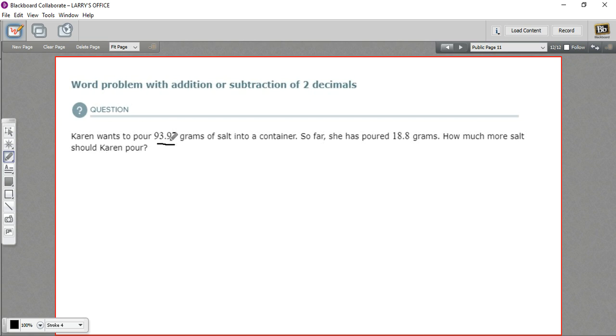So this is actually going to be a subtraction problem. We can find that amount that you'd add to 18.8 to get 93.97 by just subtracting it from 93.97. 93.97 minus 18.8 grams is going to equal that amount that she's got left to pour. So let's go ahead and do that subtraction.